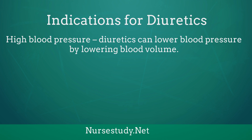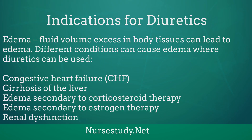High blood pressure: diuretics can be used to lower blood pressure by lowering blood volume. Edema: fluid volume excess in body tissues can lead to edema. Different conditions can cause edema where diuretics can be used, like congestive heart failure or CHF, cirrhosis of the liver, edema secondary to corticosteroid therapy, edema secondary to estrogen therapy, or even renal dysfunction.